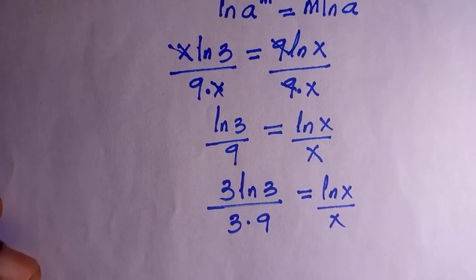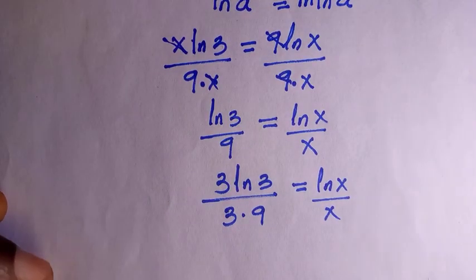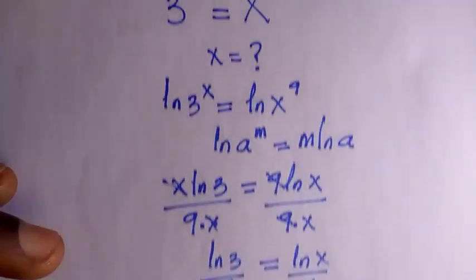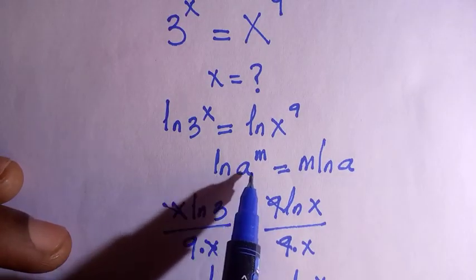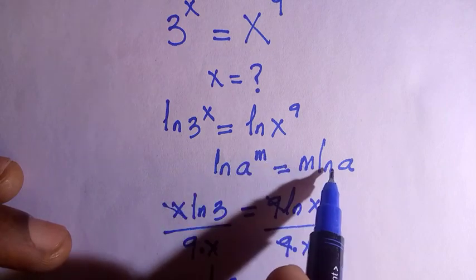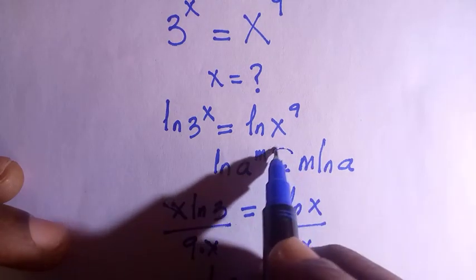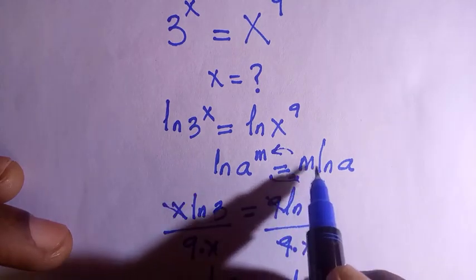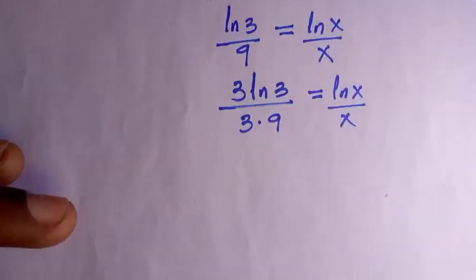It's just a small assumption. From the logarithm law, if you have ln(a^m) it equals m*ln(a), and this is vice versa, so we can also reverse these two.